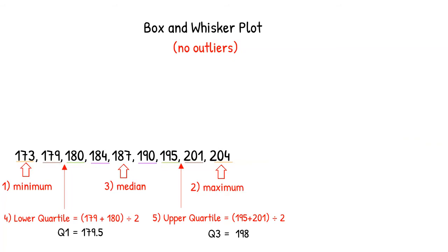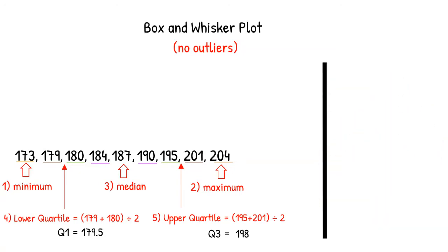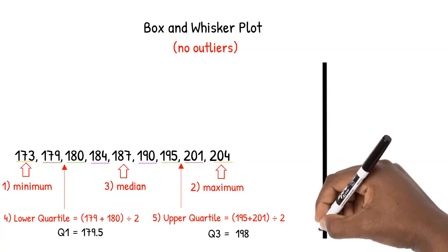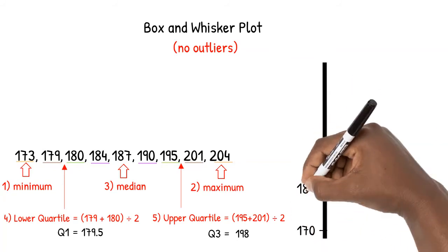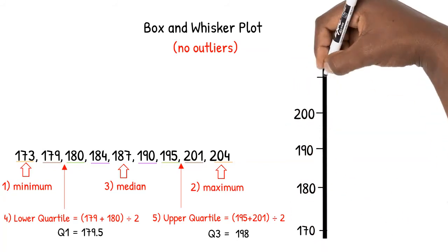Now that we recall how to find the 5-number summary, let's learn how to draw the box and whisker plot. Start by drawing a vertical line on which to place your scale. The men's weights range from 173 pounds to 204 pounds, so I've chosen to start from 170 and count by 10s.